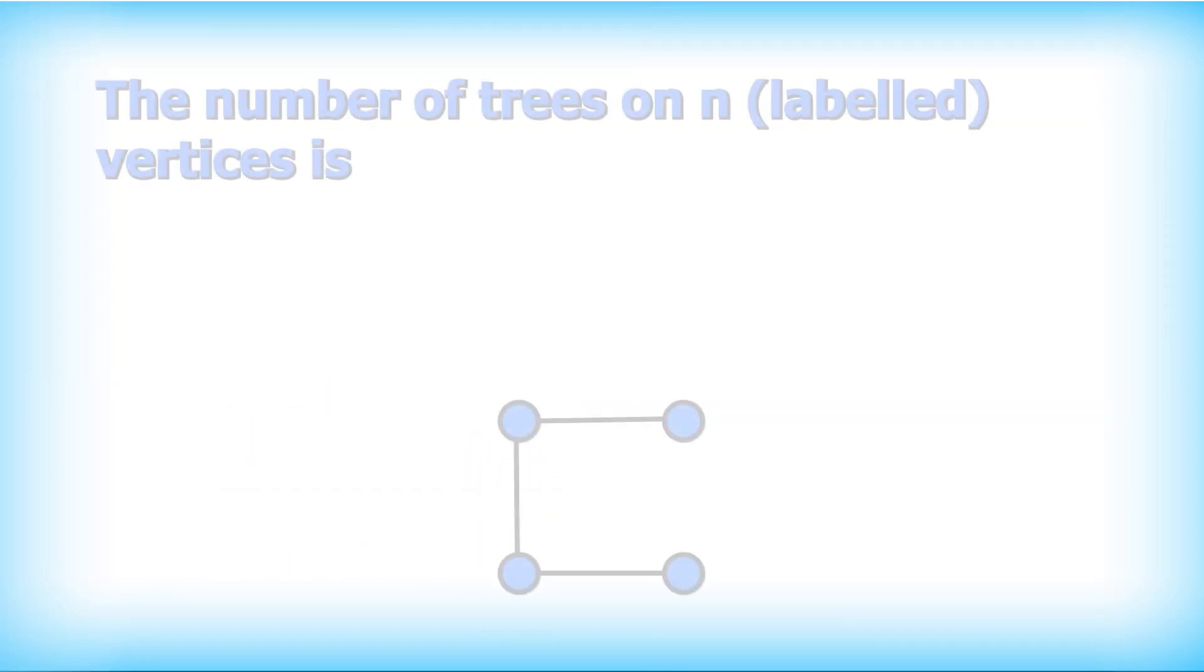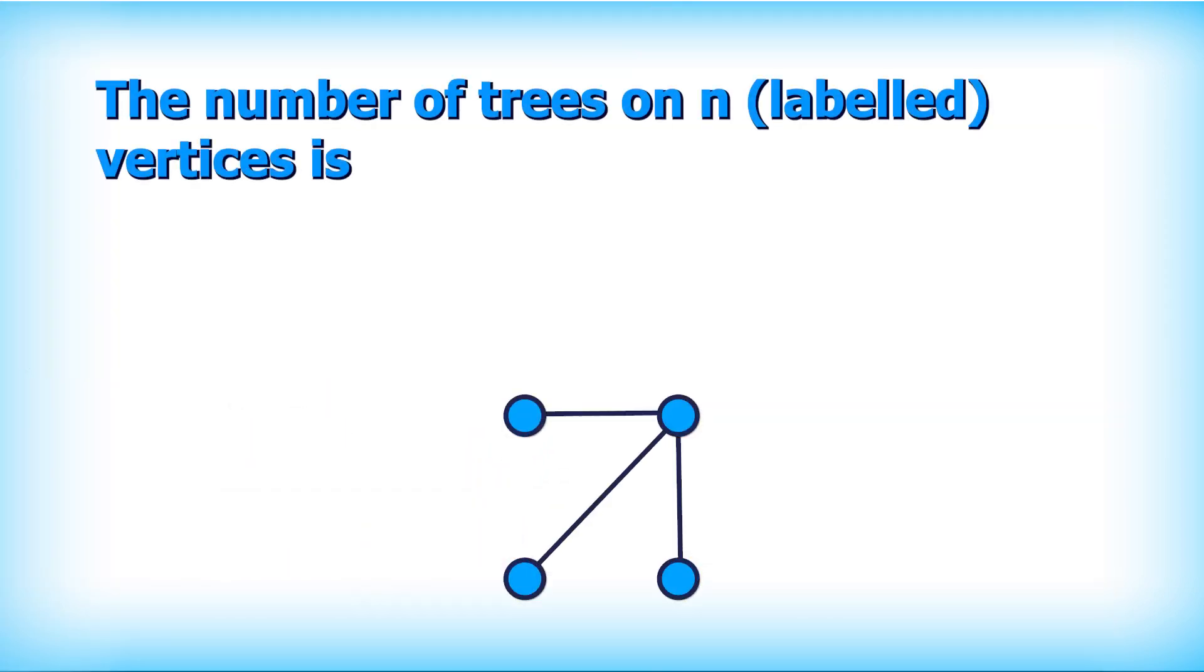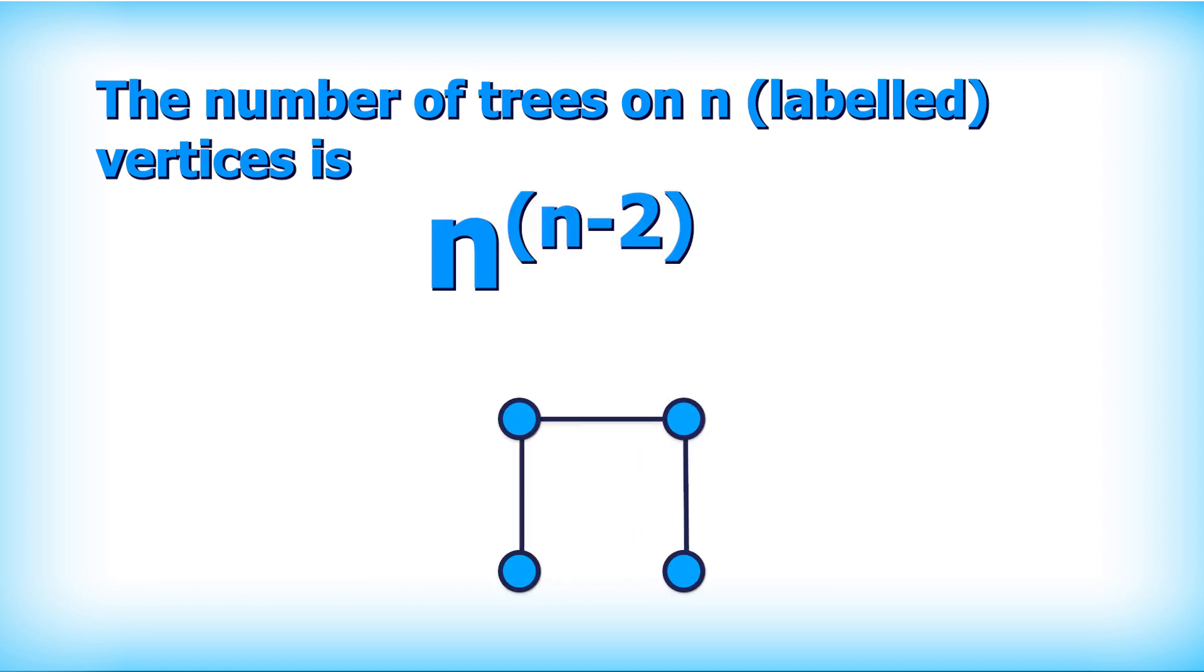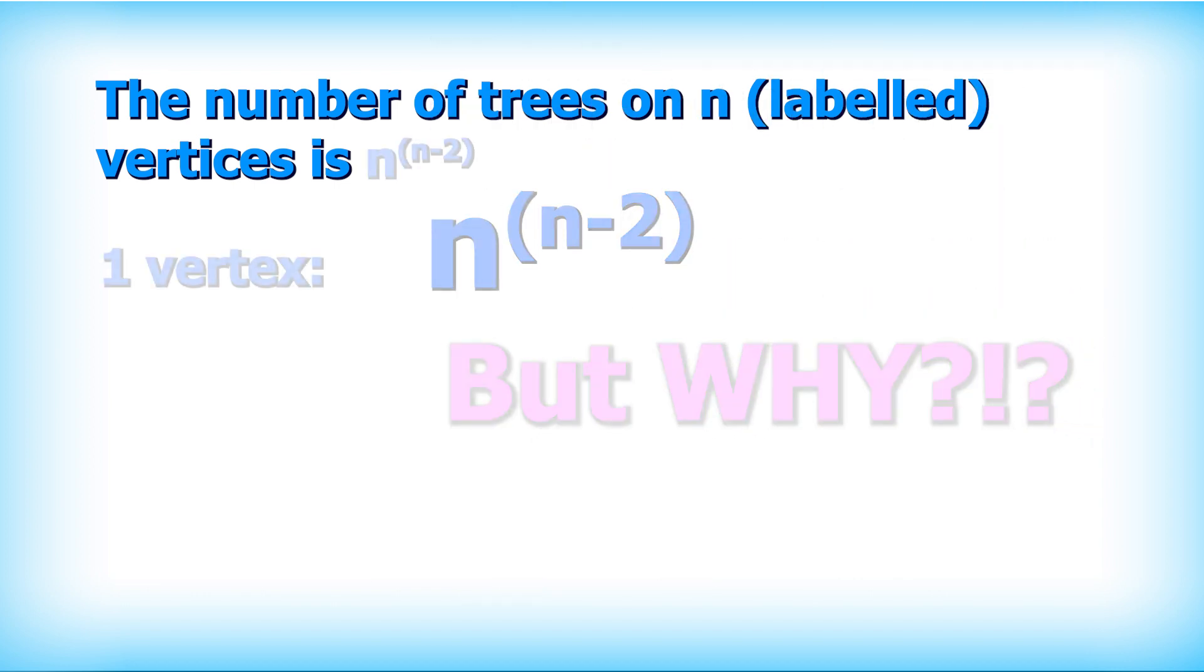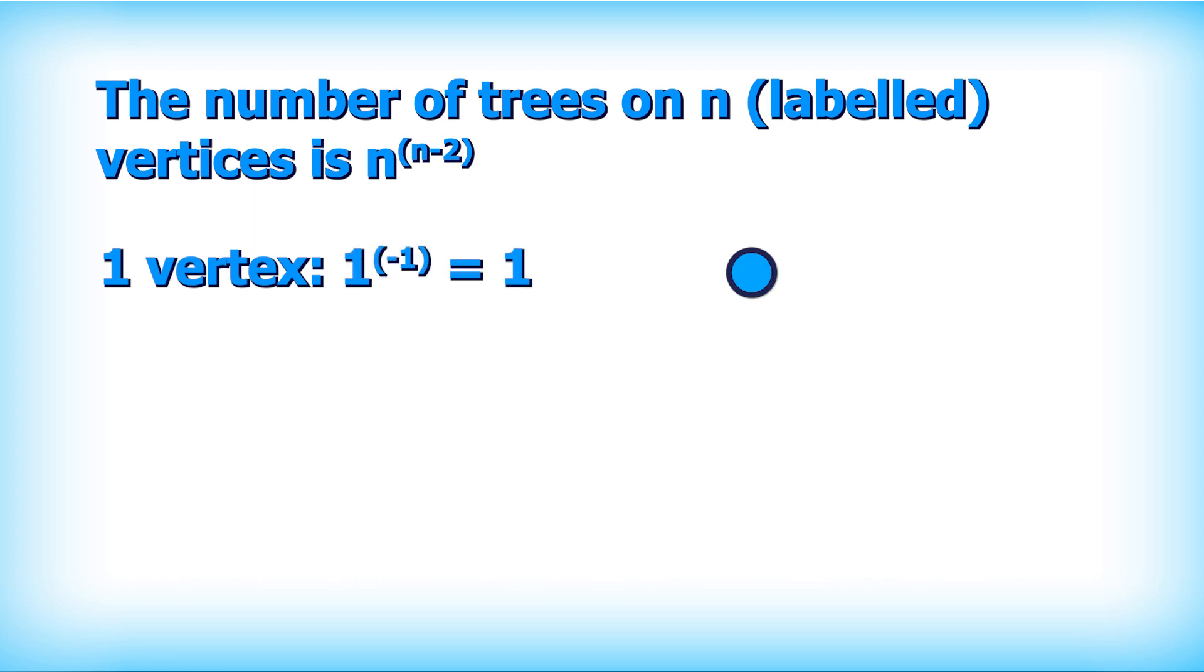If you count the number of different trees that can be made from n vertices where each vertex is different, it turns out to be n to the power of n minus 2. But why is that the case? It even works for a tree with one vertex. There's only one of these, and 1 to the power of negative 1 is 1.